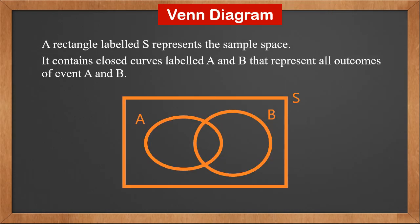We can use Venn diagram to calculate probability. A rectangle labeled S represents the sample space. It contains closed curves labeled A and B that represent all outcomes of event A and B.